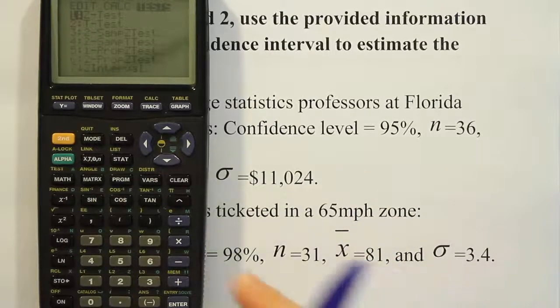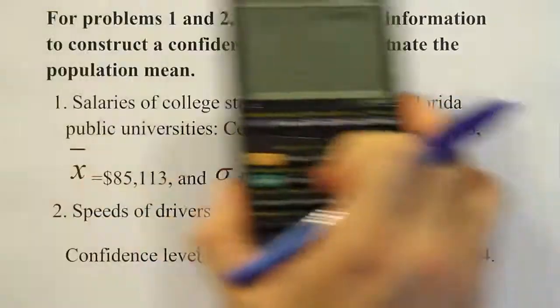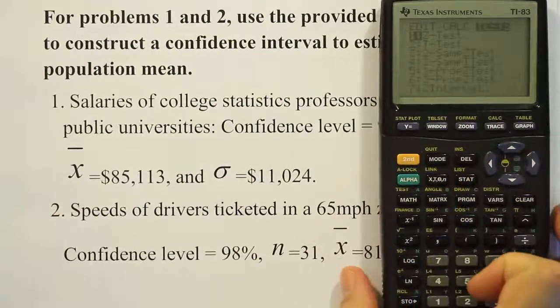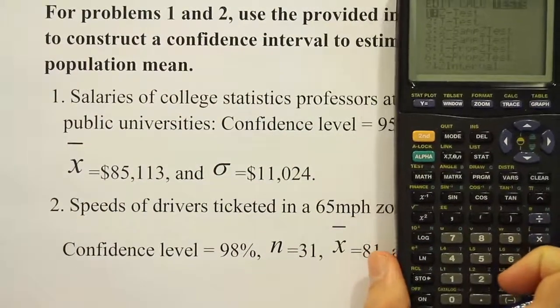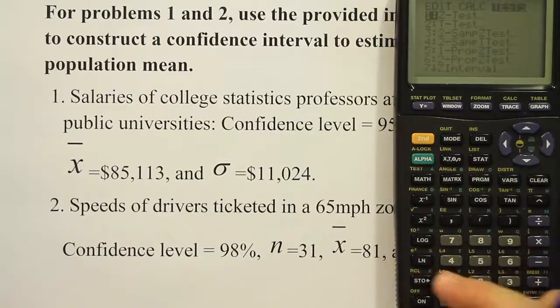So again, we'll be choosing option seven in this case because that's the information or that's the scenario that allows us to use the z interval. Both of these problems can be solved using the z interval. We're going to take option seven.